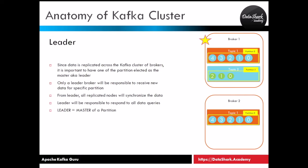As you can see here, broker one is the leader for topic one, partition zero. So if you are sending new data for this partition, it will always go to broker one, not broker two. Follower or replica nodes will synchronize their data — as you can see here, broker two, which has a replica of topic one partition zero, is getting the data from broker one, not directly from a publisher.